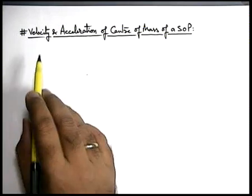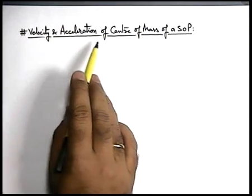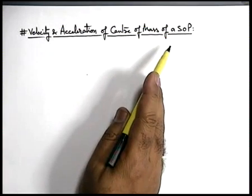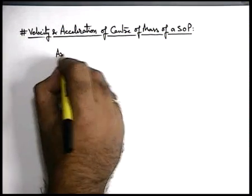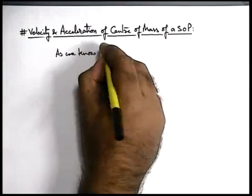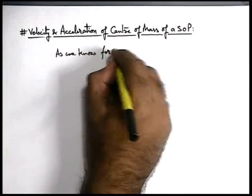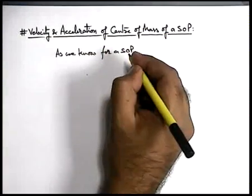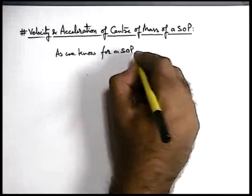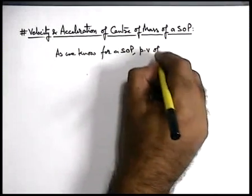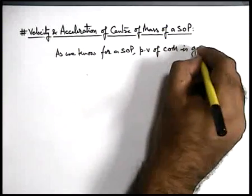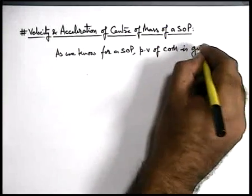Now we'll talk about velocity and acceleration of centre of mass of a system of particles. As we know, for a system of particles having multiple objects, the position vector of centre of mass is given as follows.